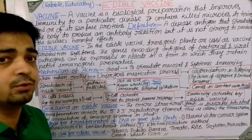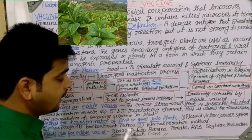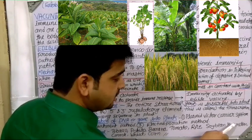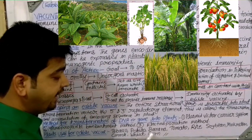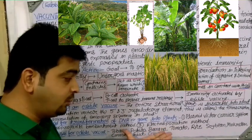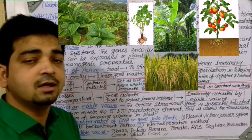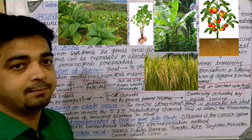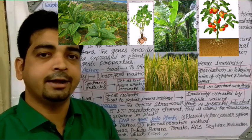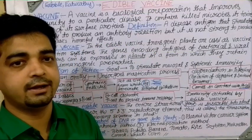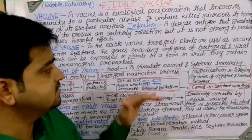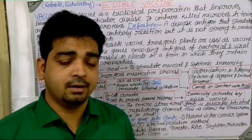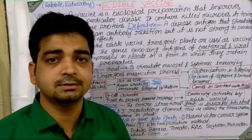The plants used for edible vaccines include tobacco, potato, banana, tomato, rice, soybean, musk melon, carrot, wheat, and corn. These are commonly used food plants where the particular antigen can be developed, allowing the edible vaccine to be administered orally to activate the immune response. For deeper knowledge, refer to additional sources. Thank you and all the best.